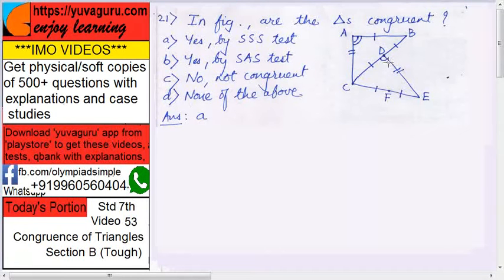See here, you need not assume things, whatever is given, check that only. So angles are not congruent, what about these sides?